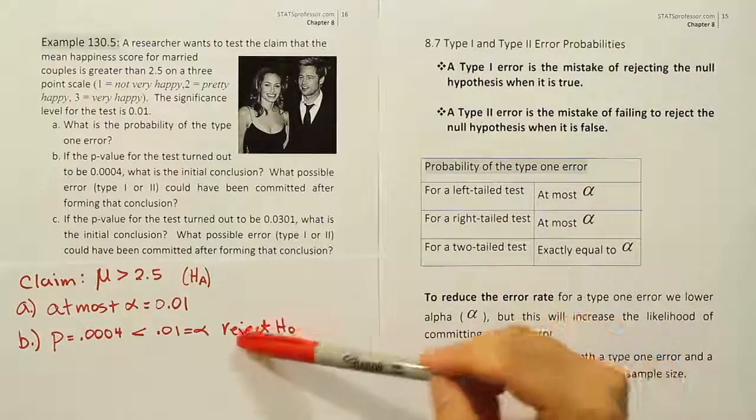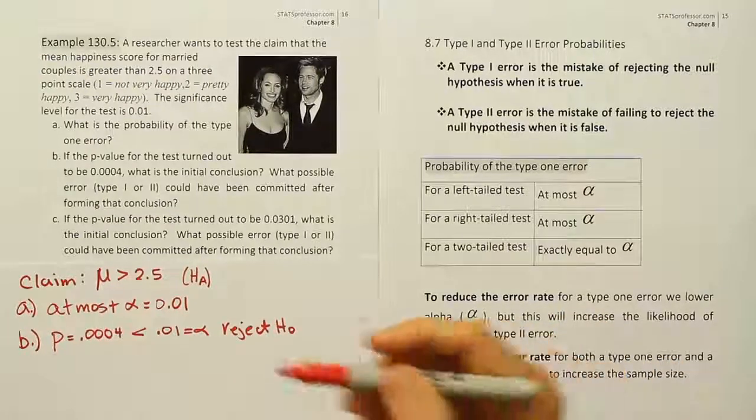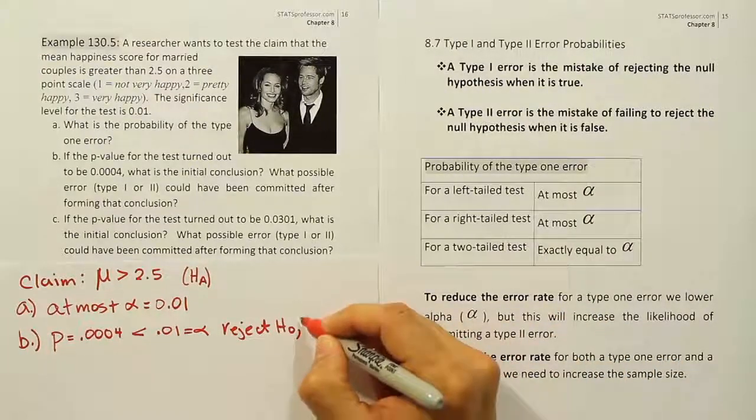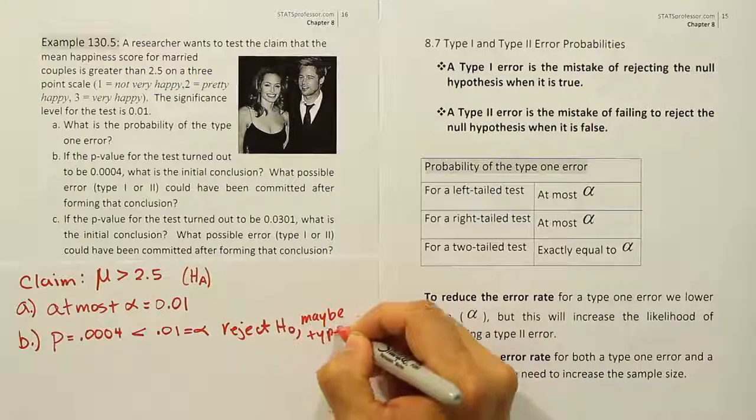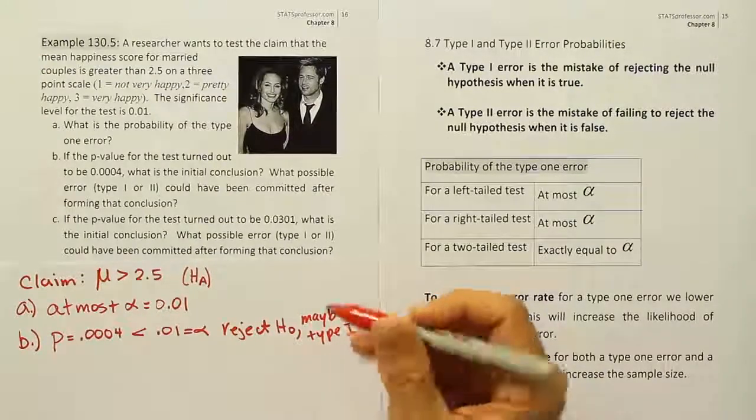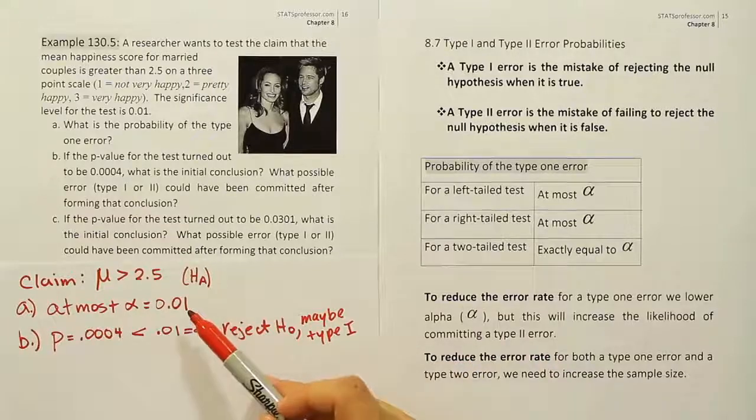So the type 2 error requires that you don't reject first as part of that. And same with the type 1 error, it requires that you do reject. So in this particular example, because we rejected, we might have committed a type 1. So we'll say maybe type 1. Remember, that's a maybe. In fact, we know the probability of it. It was 0.01. There's only a 1% chance that we committed that error.